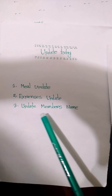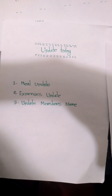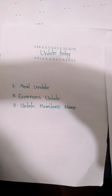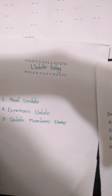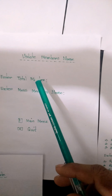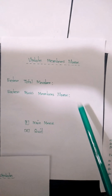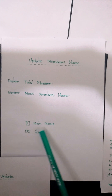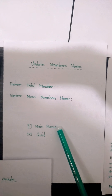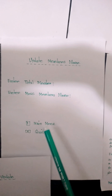Here we see the third option: update member's name. If we press three, then we go to the update member's name page. Here we see fields to enter total member and enter member's name. If we enter all those, then we go back to the main menu page.